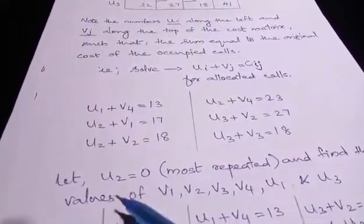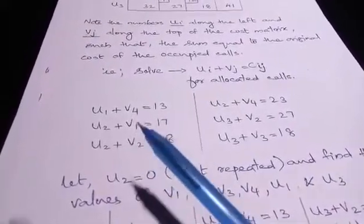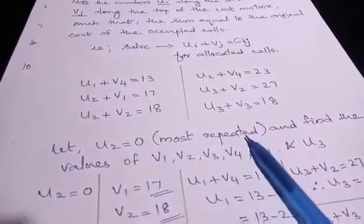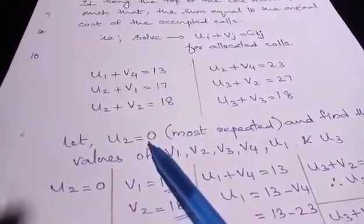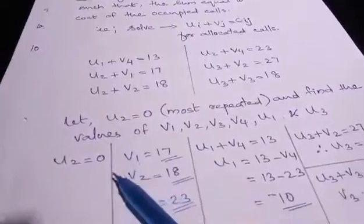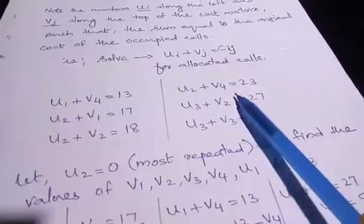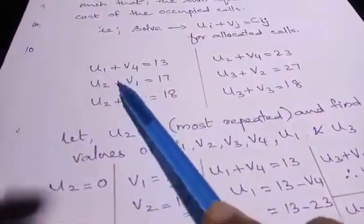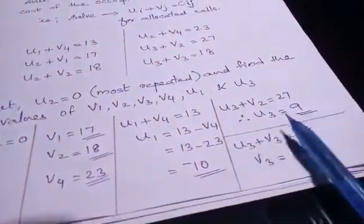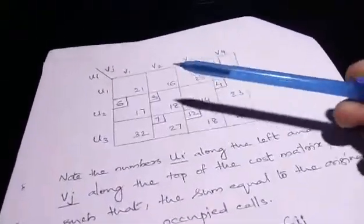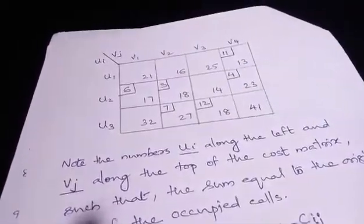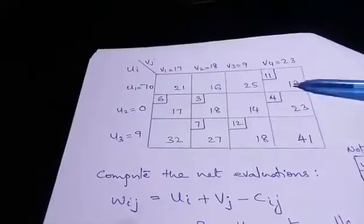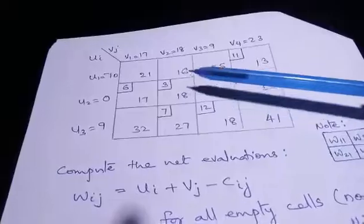From these equations we need to find the values of u1, u2, u3, v1, v2, v3, and v4. We assign 0 to the most repeated variable, which is u2. Setting u2 equals 0, we solve: v1 equals 17, v2 equals 18, v4 equals 23. Then substituting back, u1 plus v4 equals 13 gives u1, and u3 plus v2 equals 27 gives u3. Now all values of u1, u2, u3, v1, v2, v3, and v4 are found.